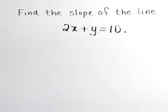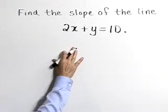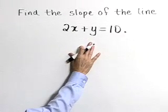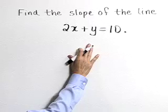Find the slope of the line 2x plus y is equal to 10. I think the best way to find the slope of this line is to solve it for y and put this equation in slope-intercept form.